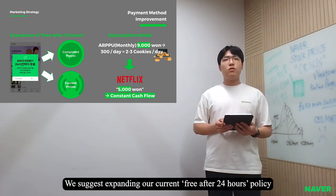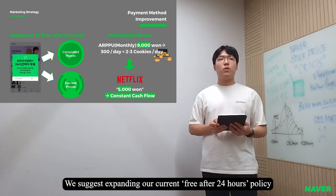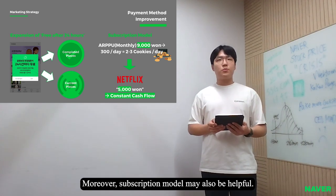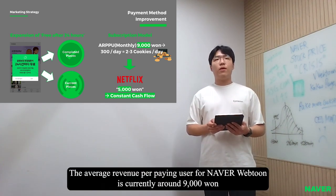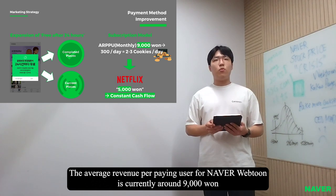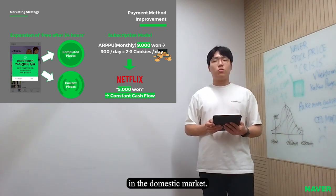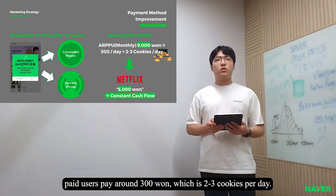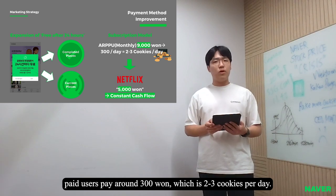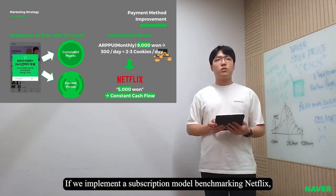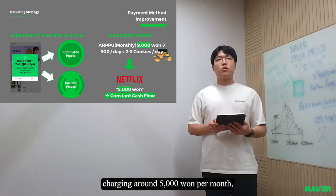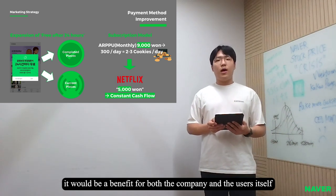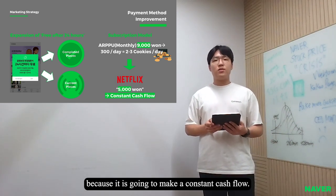We suggest expanding our current free-after-24-hours policy from completed series to current series. Moreover, a subscription model may also be helpful. The average revenue per paying user for Neighbor Webtoon is currently around 9,000 won in the domestic market. If divided on a daily basis, paid users pay around 300 won — just 2 to 3 cookies per day. If we implement a subscription model benchmarking Netflix, charging around 5,000 won per month, it would benefit both the company and users by generating constant cash flow.